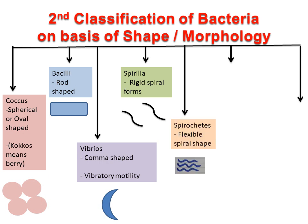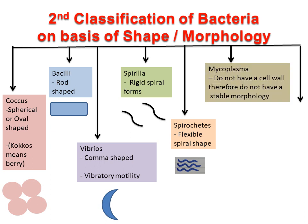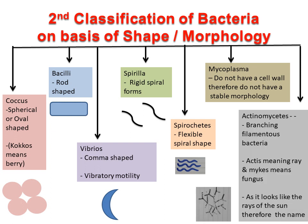Spirochetes are bacteria with a flexible spiral shape. Mycoplasma do not have a cell wall and therefore do not have a stable morphology. Actinomycetes are branching filamentous bacteria. Actus means rays and micus means fungus. As actinomycetes look like the rays of the sun, therefore the name actinomycetes.